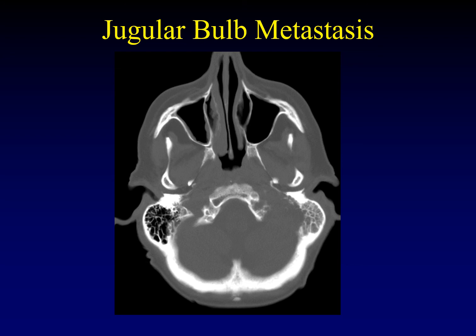Metastases are always on the differential because they can affect any bone. They tend to be very erosive, but in a different pattern than paragangliomas. Paragangliomas tend to extend superiorly and laterally toward the middle ear cleft. Metastases don't have that proclivity — they just grow spherically in any direction. When you see erosions on all sides of the jugular bulb, it's less likely to be a paraganglioma; think about metastasis.